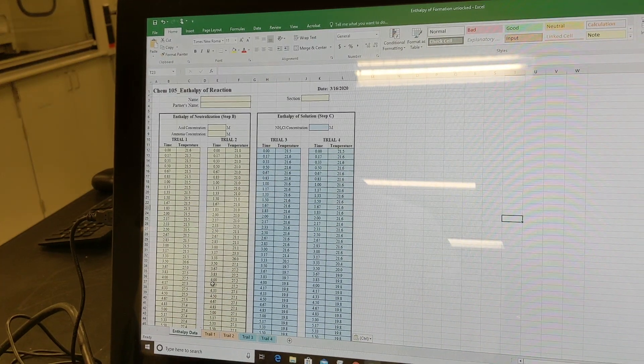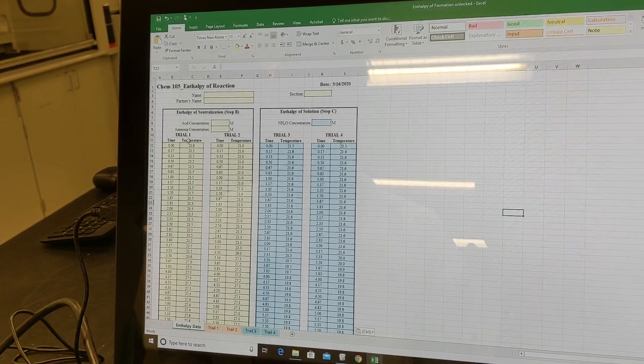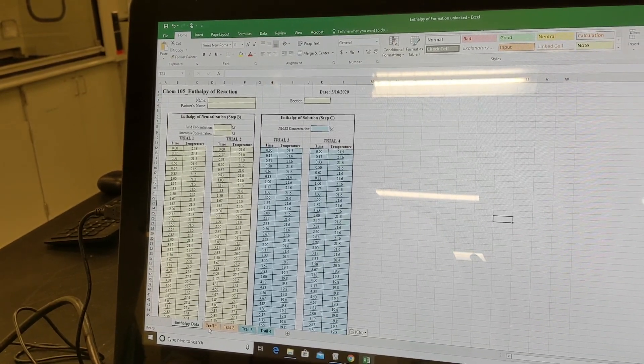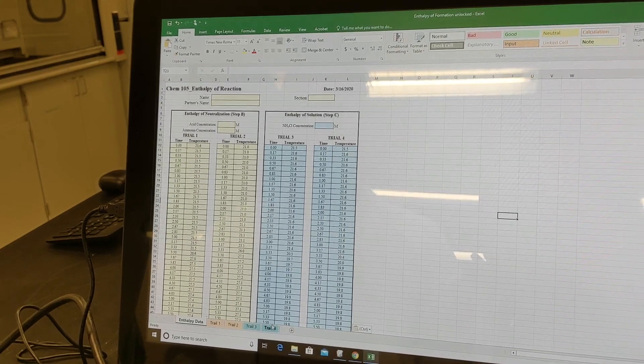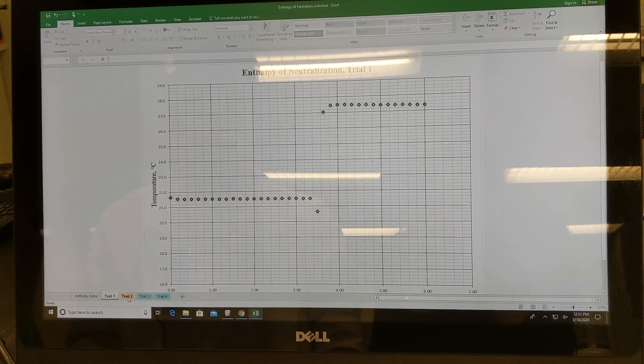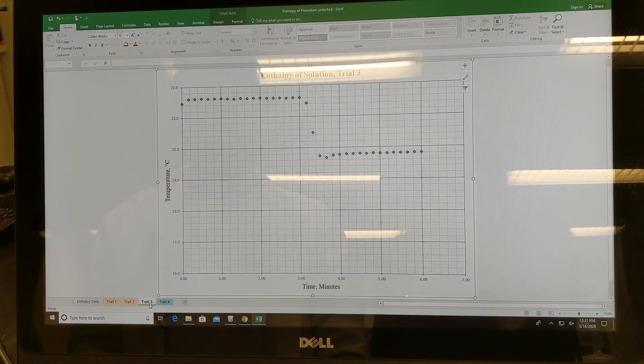So here we have our data for all four trials, step B and step C, here in this Excel sheet that will be sent out to you. All of the data is already in graphs for each trial.